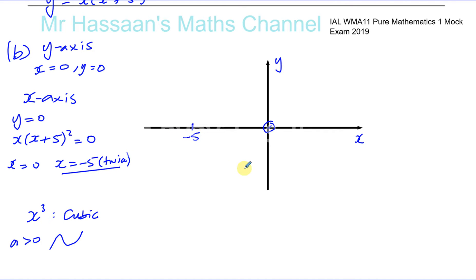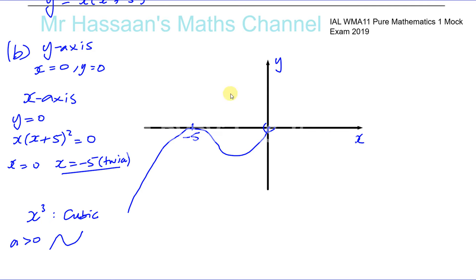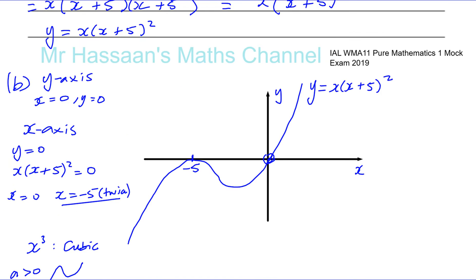If that's going to be the case it has to have this type of shape: coming from below, getting to minus five and turning there without cutting through, coming down, then turning again and going up through the origin. So this is the equation y equals x times (x + 5) squared that we were asked to sketch.